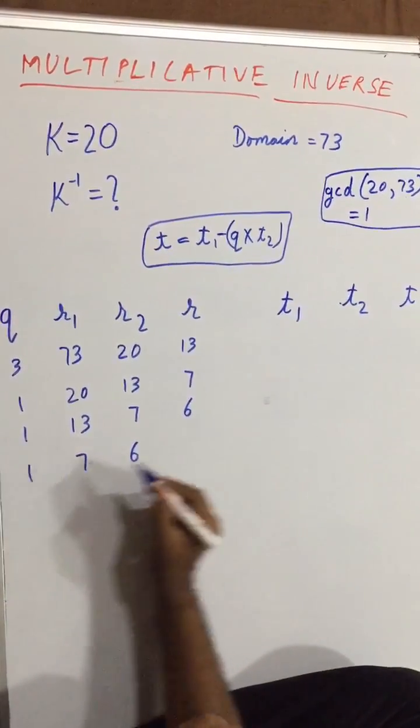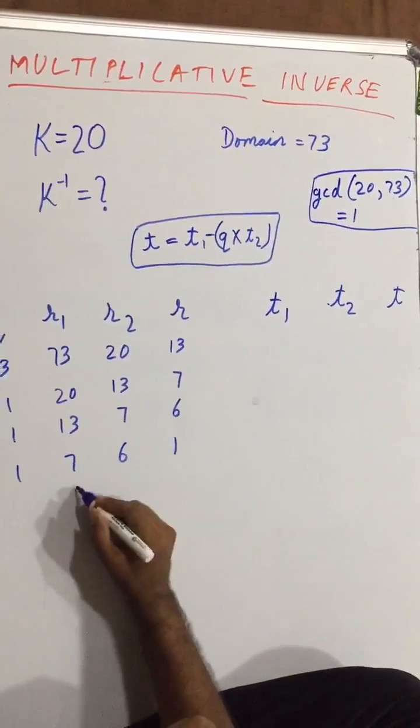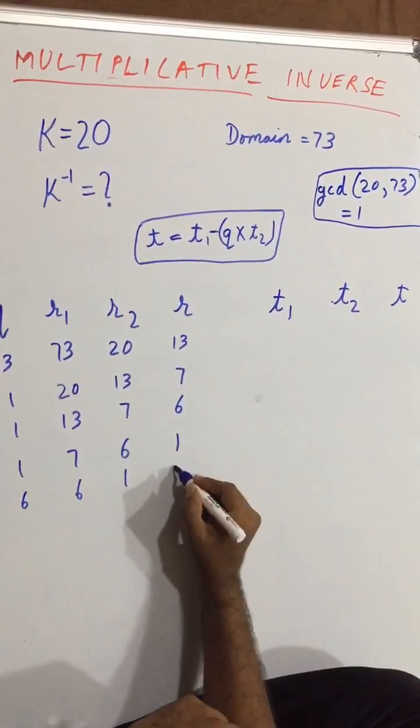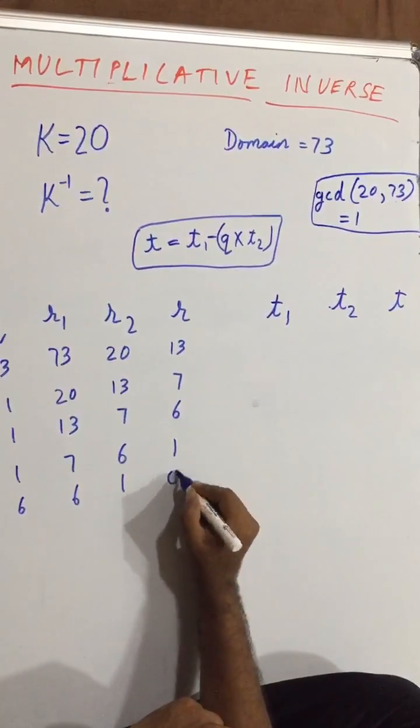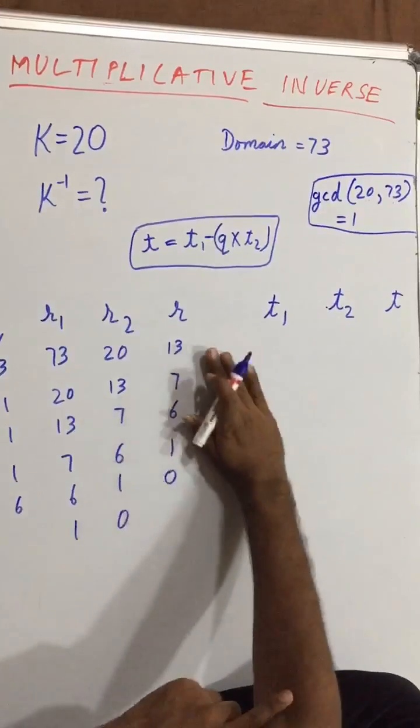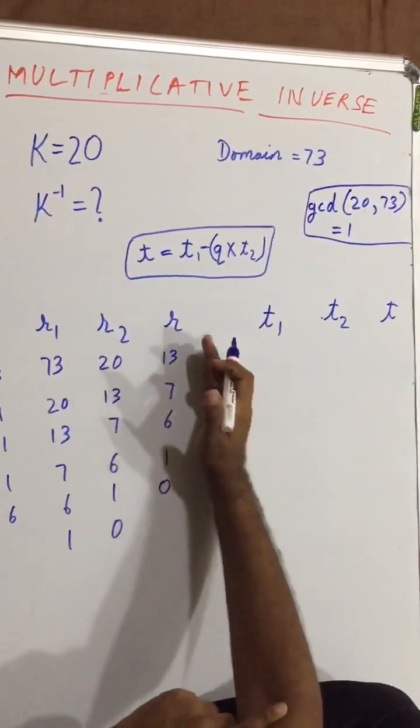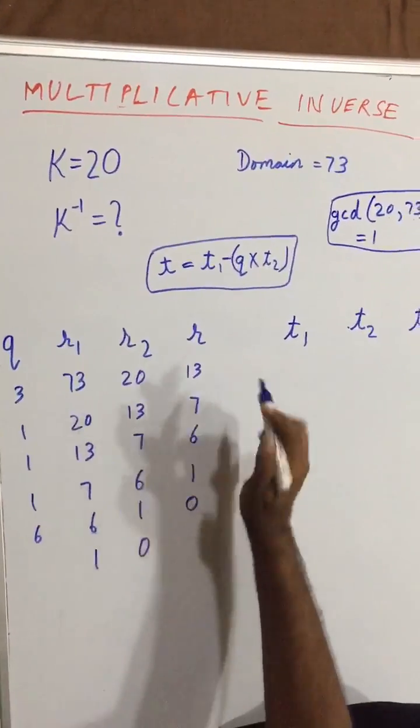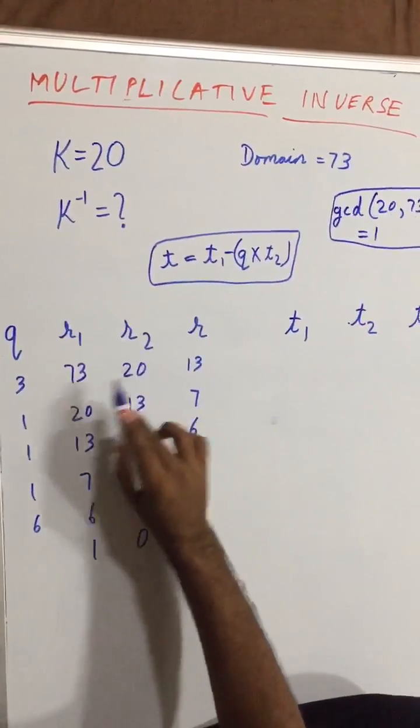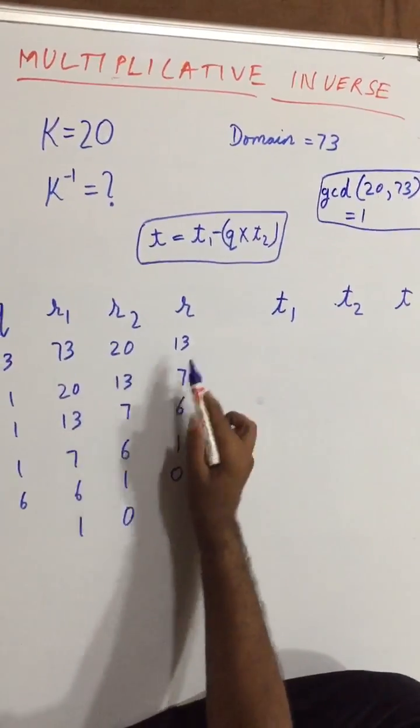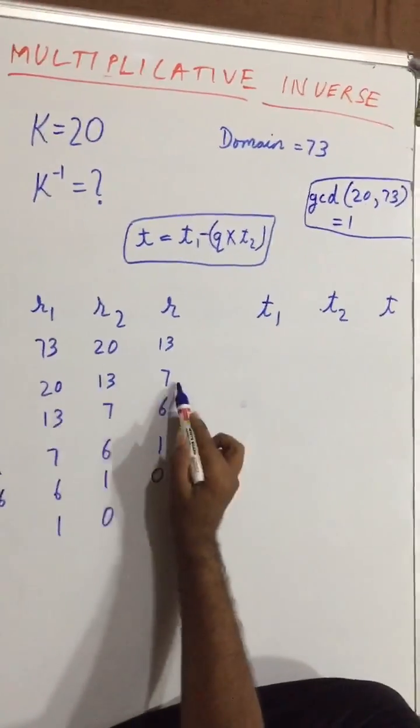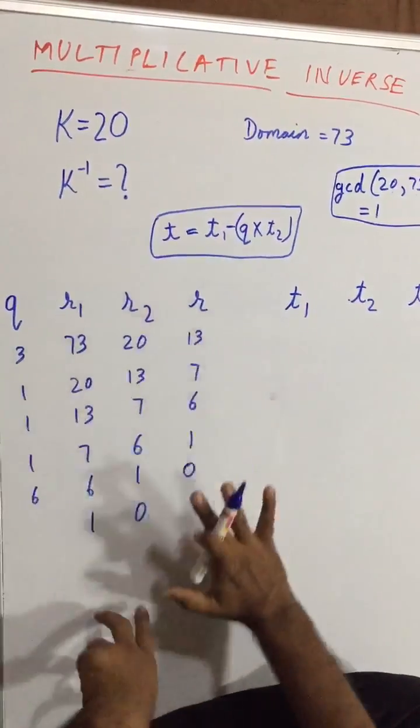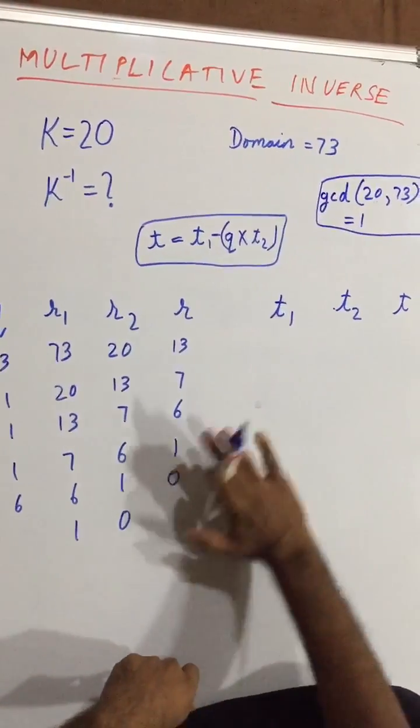Now 7 and 6, so again 1, here we will be getting remainder is 1. 6 and 1, so multiplied by 6, and here we will be getting our answer is 0. Now shift is 1 and 0. So what we did here is the basic division. We did basic division multiplication steps we took over here where r is our remainder and q is our quotient. 20 into 3, 60, remainder is 13; 13 ones are 13, remainder is 7; 7 ones are 7, remainder is 6. So this we have done over here, clear.